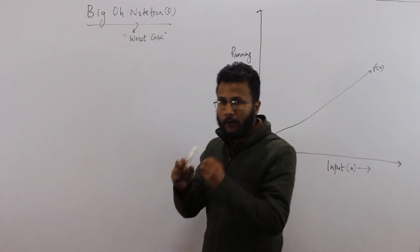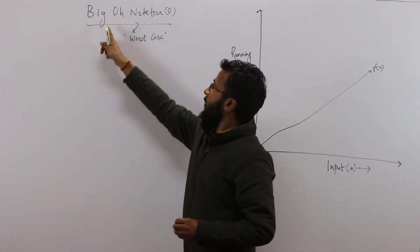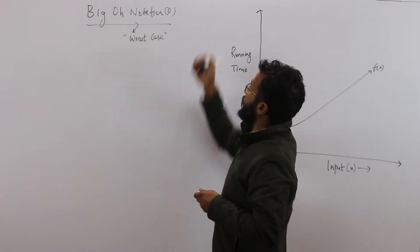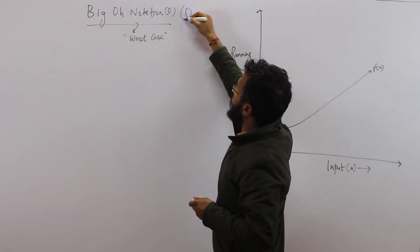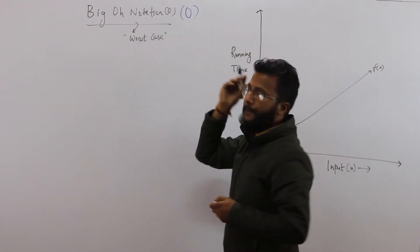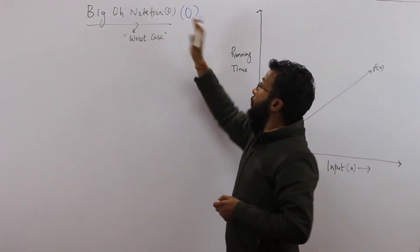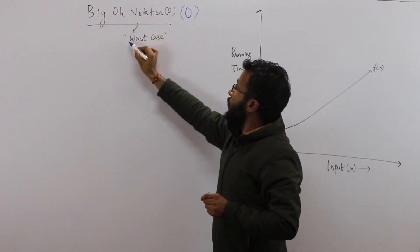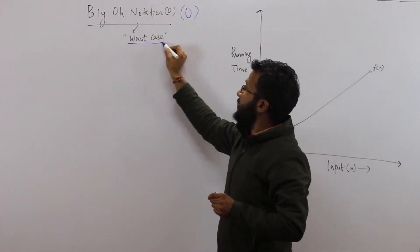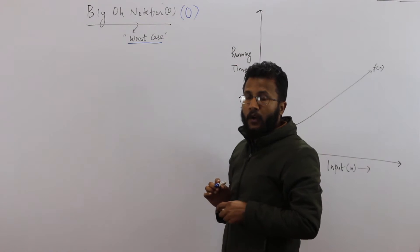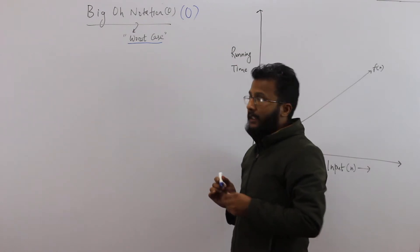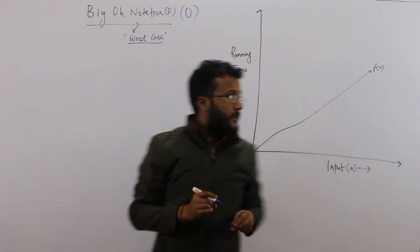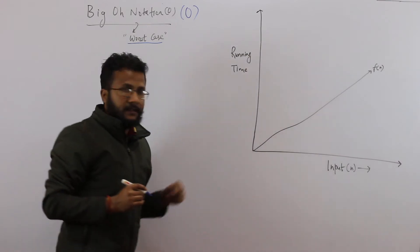Let us try to define formally what is Big O notation, also denoted by capital O. Big O notation corresponds to the worst case time complexity of an algorithm. Let us try to understand Big O by using a graph.